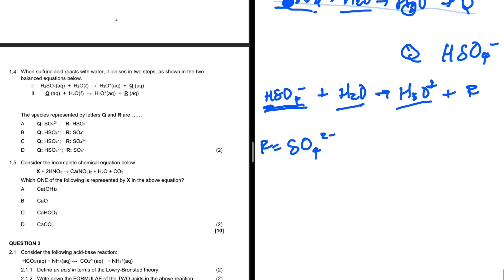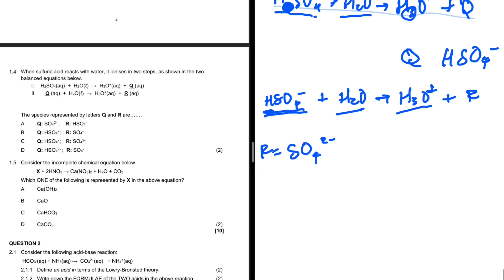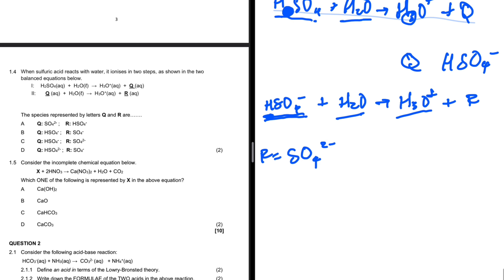Looking at the options: option A says Q is SO₄²⁻, which is incorrect. Option B says Q is HSO₄⁻, which is correct, and so does C. Option D says Q is HSO₄²⁻, which is incorrect. Considering B and C for R: option B says R is SO₄²⁻, while option B also lists SO₄⁻ which is incorrect. Therefore our answer is C.